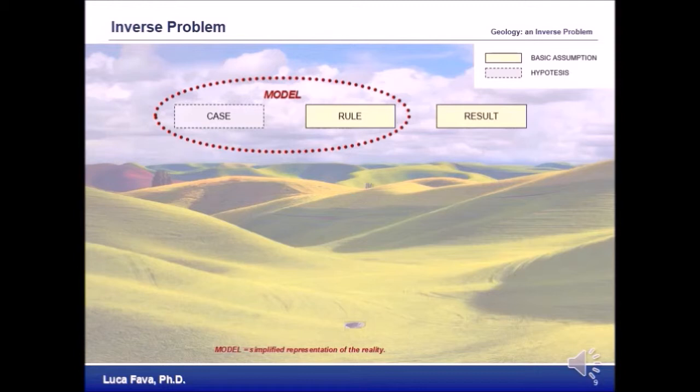The uncertainties are huge. Moreover, even if we were sure the rule is correct, there would be still a fundamental point about inverse problems that makes them very peculiar. Let's come back to our example to explain this point.